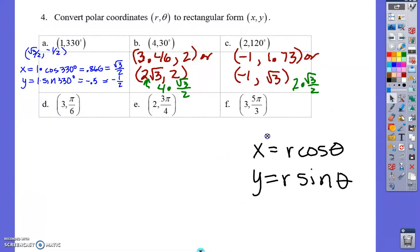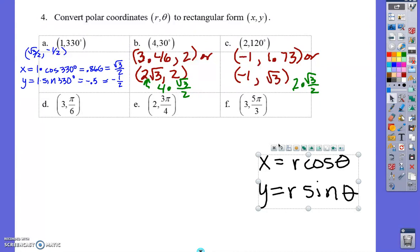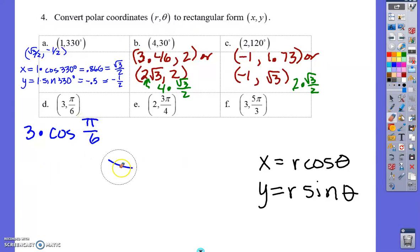We're going to continue with Part D. Now we need to switch our calculators to radian mode. Make sure you do that before you start or you're going to get the wrong answer. I'm still using the same formula. So I'm going to have 3 times the cosine of π/6. But this time I'm going to try to do this without the calculator. Then I'll also have 3 times the sine of π/6. Of course you can use your calculator. I'm going to use my calculator to check me when I'm done, but I'm trying to do it without it.